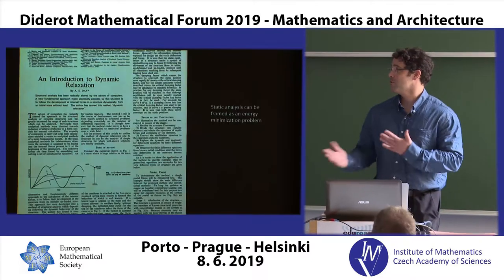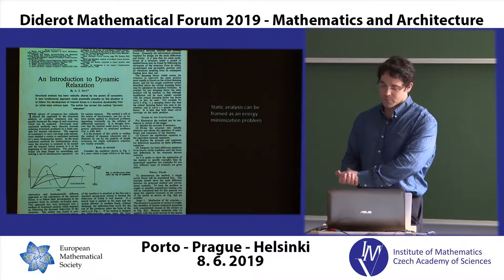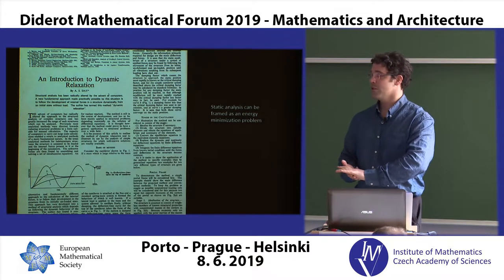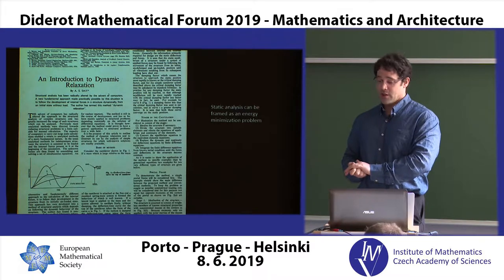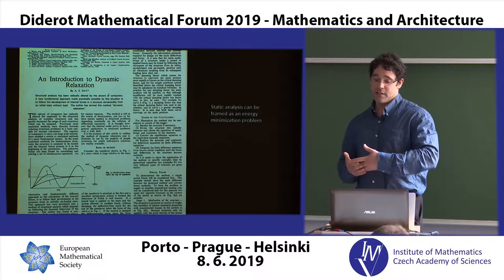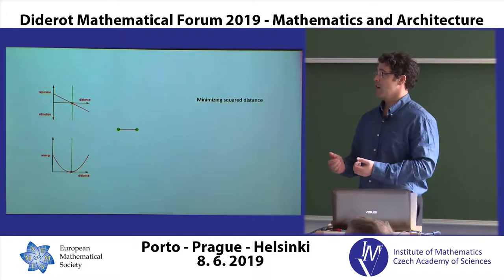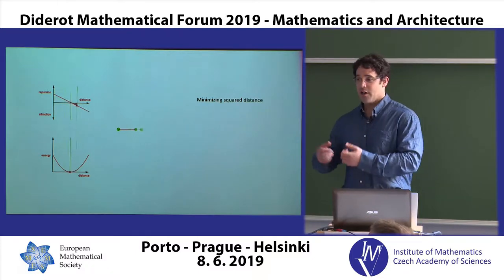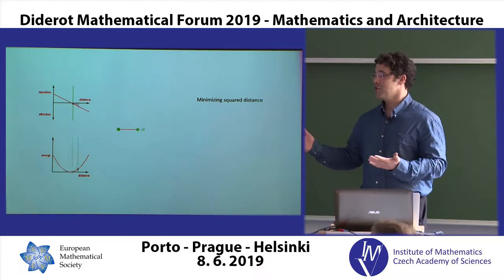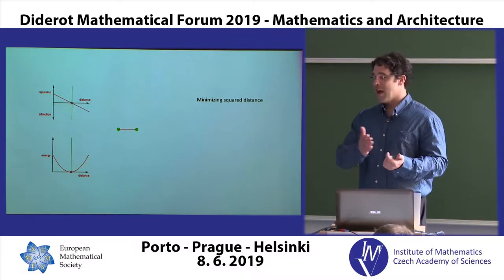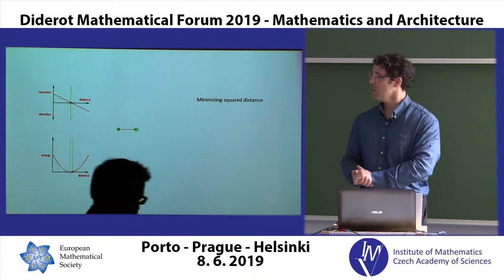Just to talk a little bit about where these ideas come from and the name — dynamic relaxation. I think the term was first used in this article by Alistair Day. There he was talking about using energy minimisation to do static analysis, not necessarily just for form finding, but the idea being that you can take some structure, deform it, and then the potential energy stored gets converted into kinetic energy. It moves, passes usually through equilibrium and bounces back and oscillates, you apply some damping, and eventually you get to a minimum of your function.